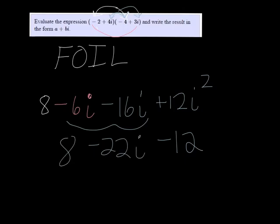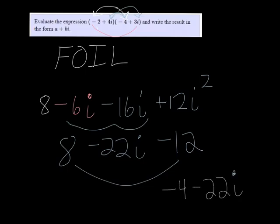And then I have 8 here. 8 minus 12 is negative 4, and then we keep the minus 22i. And that is in a plus bi form.